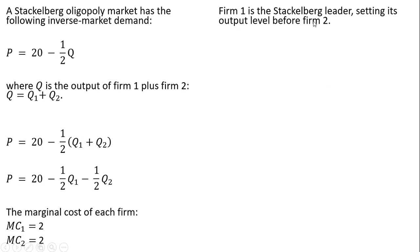Firm 1 is the Stackelberg leader, setting its output level before Firm 2. When Firm 1 sets its output level, it considers how Firm 2 responds to its output, so we need Firm 2's reaction function.